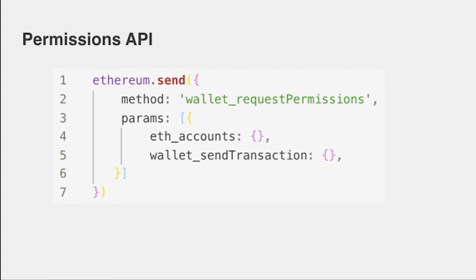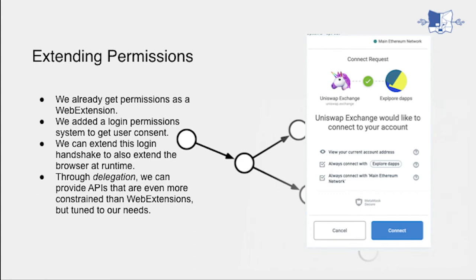We've written a little permissions system. We added to the API that we provide to sites a way of requesting permissions from our wallet. But the most interesting permission we added was the permission to run a script, which itself gets permissions. This means we get a nice prompt when somebody's logging in with our system. We already get permissions and now we have the ability to get user consent to further delegate those permissions. We're confined as a web extension, but now we can further confine things we want — through delegation we can extend APIs that are very specific to what a new cryptocurrency wallet needs.